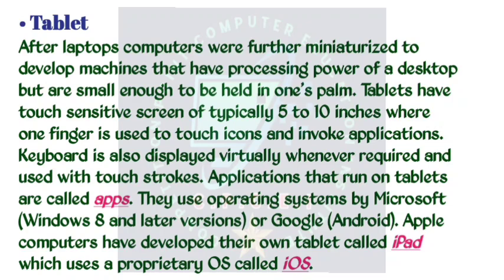After laptops, computers were further miniaturized to develop machines that have processing power of a desktop but are small enough to be held in one's palm. Tablets have touch-sensitive screens of typically 5 to 10 inches where one finger is used to touch icons and invoke applications. The keyboard is also displayed virtually whenever required and used with touch strokes. Applications that run on tablets are called apps. They use operating systems by Microsoft (Windows 8 and later versions) or Google (Android). Apple computers have developed their own tablet called iPad, which uses a proprietary OS called iOS.